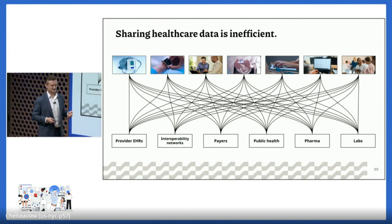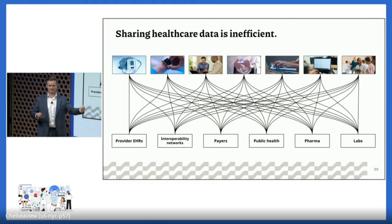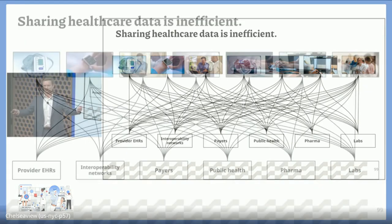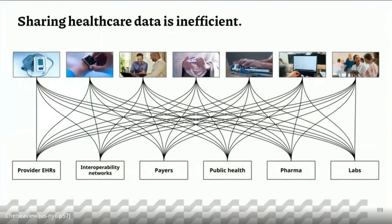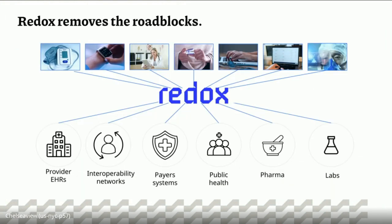So we sat down and said: if everybody's building the same data exchange layers — demographics over here, schedule appointments over there, CCDs over here, X12 over there — then why don't we build it so that when we connect to health system A on behalf of partner number one, when partner number two needs to connect to that same health system for the same demographic feed, we can tap right into that same infrastructure.